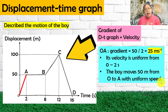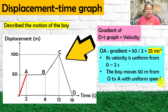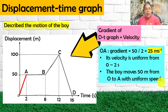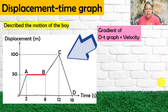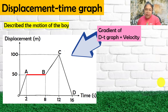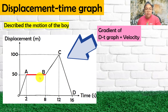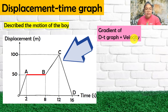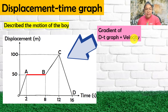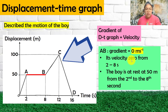Now the second part, A to B: the line is flat. When the line is flat, there is no gradient — the gradient equals zero. If the gradient equals zero, the velocity of the object moving from A to B must also be zero. So from A to B, gradient equals zero, and therefore velocity equals zero, from 2 to 8 seconds.